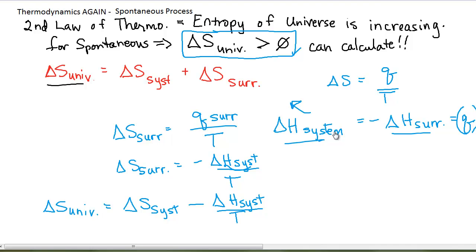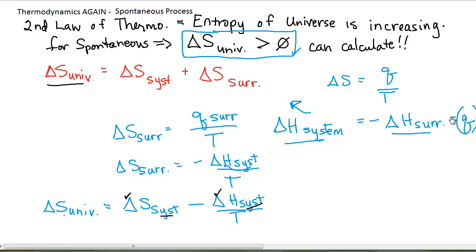This makes it a little less daunting, because now I don't have to calculate anything for the entire surroundings. All I need are the enthalpy change and entropy change for my system. If I'm looking at a chemical reaction, we have a toolbox full of values that allow us to calculate delta H's and delta S's for chemical reactions fairly straightforwardly, so it's not as daunting to talk about the delta S of the universe.